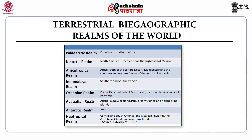In this table, the terrestrial biogeographic realms of the world have been tabulated. The Palearctic realm includes Eurasia and Northern Africa. The Nearctic realm has North America, Greenland and the Highlands of Mexico. The Afro-Tropical realm includes Africa south of the Sahara Desert. The Indo-Malayan realm covers Southern and South East Asia. The Oceanic realm covers Pacific Ocean islands of Melanesia, Micronesian islands and most of Polynesia. The Australian realm has Australia, New Zealand, Papua New Guinea and neighboring islands. The Antarctic realm is composed of Antarctica. The Neotropical realm comprises Central and South America, the Mexican lowlands, the Caribbean islands and Southern Florida.